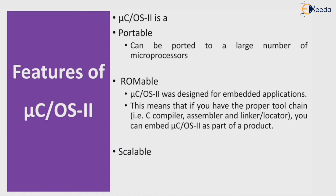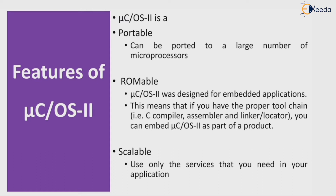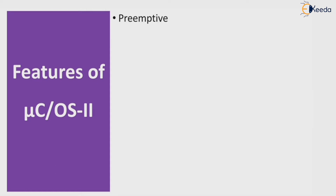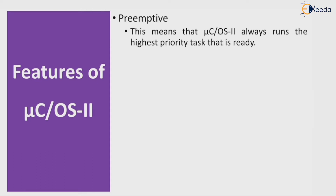It is scalable — use only the services that you need in your application. It is pre-emptive, meaning µC/OS-II always runs the highest priority task that is ready.